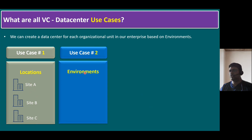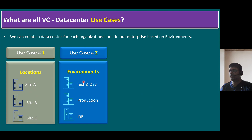Use case two is based on environment type. We can create one data center for test and development, one for production, and another for disaster recovery. All your test ESXi hosts and virtual machines go under the test and development data center, your production ESXi hosts and VMs under the production data center, and similarly for the DR data center. Sometimes, if the organization doesn't have much budget, the test and development data center can also be used for DR purposes. If there's enough setup, a separate data center for DR can be created.